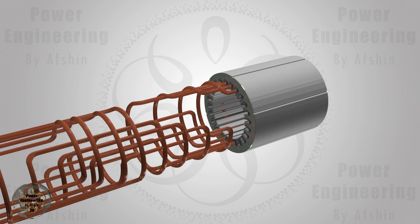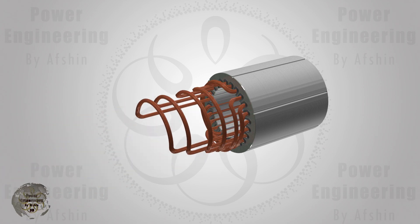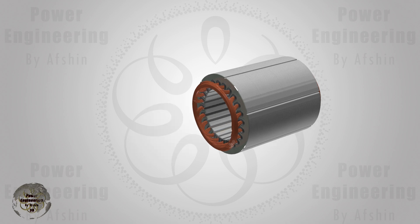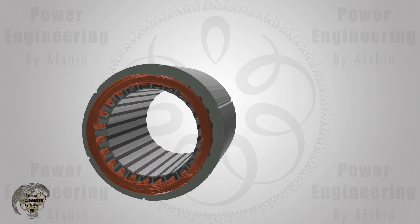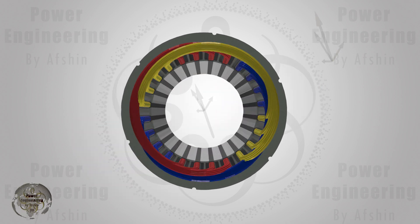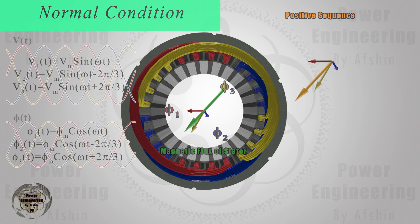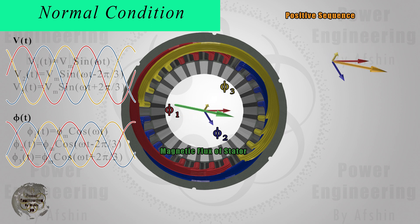First, consider the stator of a three-phase induction motor with two poles and 24 slots. This stator is powered by a sinusoidal three-phase voltage. On the left side of the video you can see the three-phase voltage. This three-phase voltage will create a rotating magnetic field inside the motor. To see how this rotating magnetic field is created, watch the corresponding video.